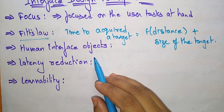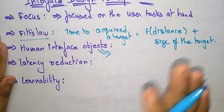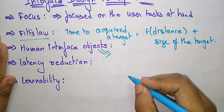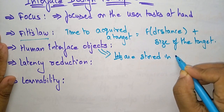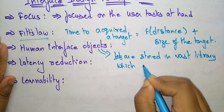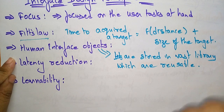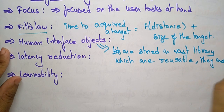Next is human interface objects. A vast library of reusable human interface objects has been developed for web apps. These objects are stored in a vast library and are reusable, making them useful for developing web apps.